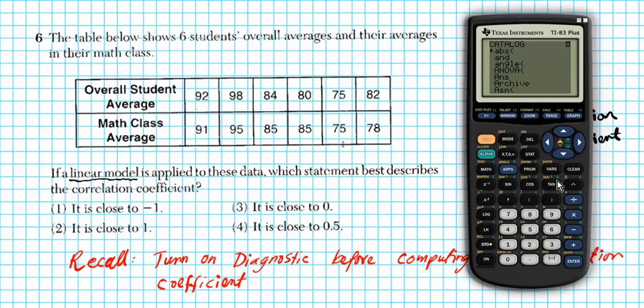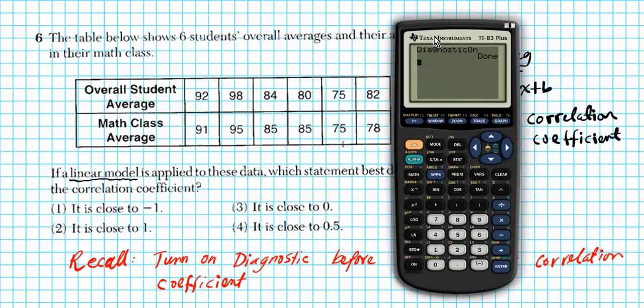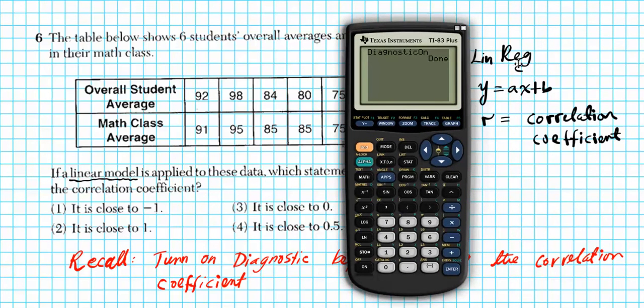So let's go ahead and do that. I'm going to go to my catalog and look for diagnostic. So I'm just going to press the letter D to scroll to D. Scroll down. Diagnostic on. Enter. Enter. So diagnostic is now on. Now what we're going to be calculating or determining is a linear regression equation with some more information. Press stat. Scroll to calculate. On the calculate menu, you look for linear regression. Scroll down. Option 4 is linear regression AX plus B. Press Enter. Enter. Bam.